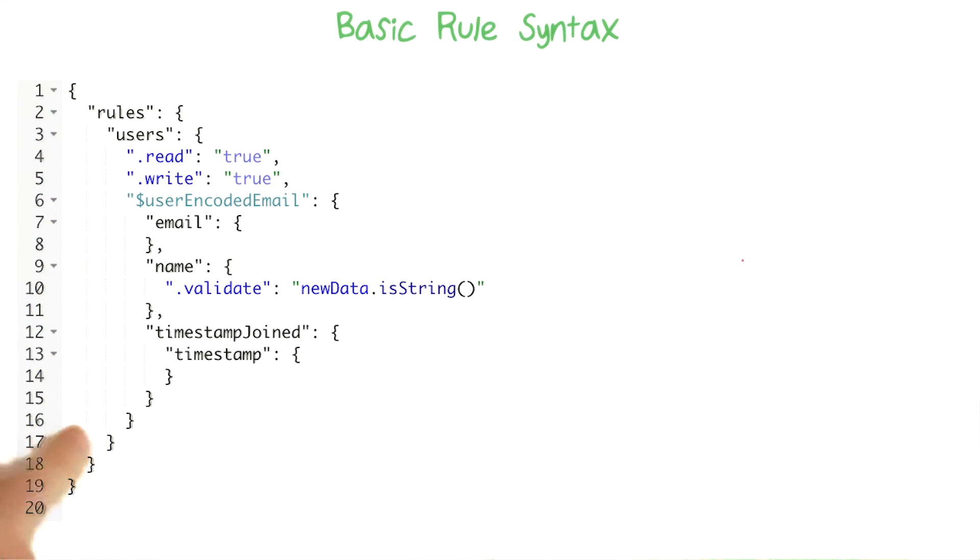Normally your rules are going to mirror your database structure. So for example, if I wanted to write some rules to validate the structure of my user node, I might write something like this. As you can see here, I've got the exact root node name of the user node. And here, I've got the key names embedded of all the properties.